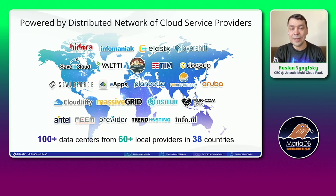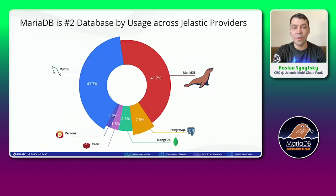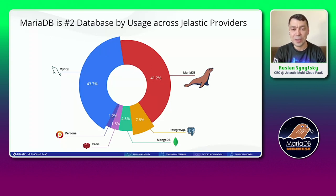A little bit more about Jelastic partners around the world. We are a software company focused on development of our platform. We collaborate with many hosting service providers around the world, enabling them to deliver modern cloud services to different local markets. Today Jelastic is available in more than 100 data centers, collaborating with more than 60 different service providers, and our network is growing almost every week. We love MariaDB and our customers love MariaDB — it has the second place among databases and is pretty popular within the Jelastic user base.